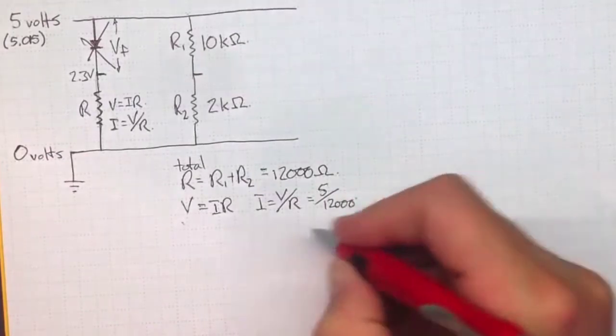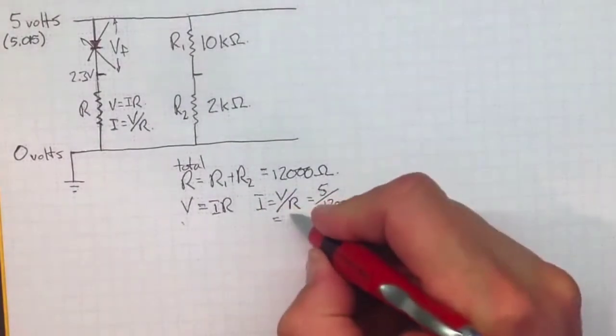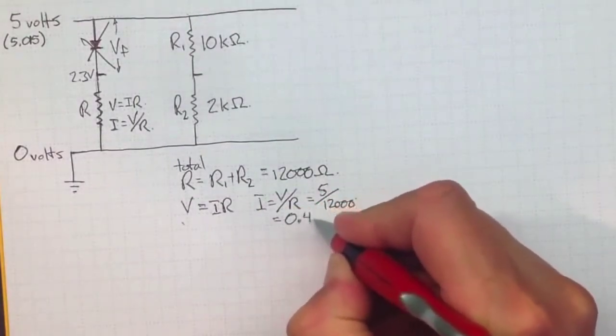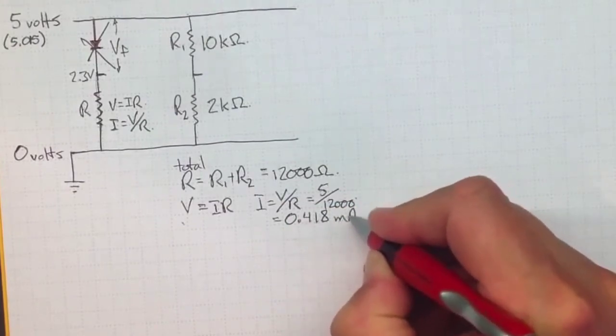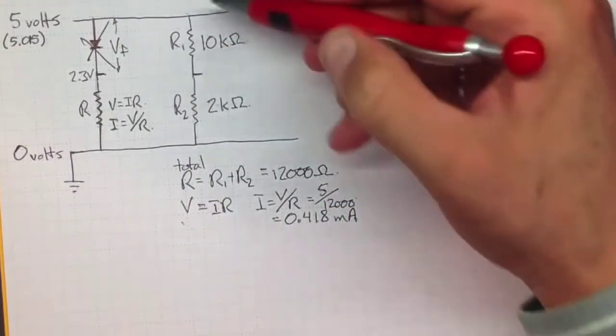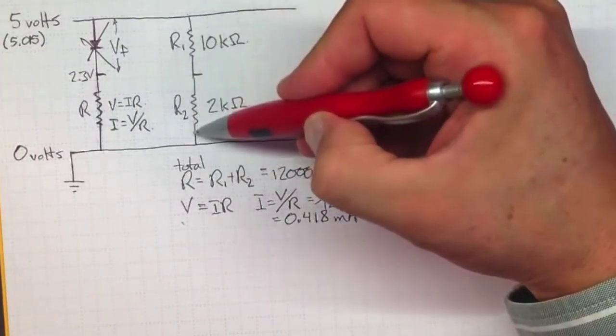Then we wind up with 0.418 thousandths of an amp, milliamps, flowing through this series circuit, two resistances in series.